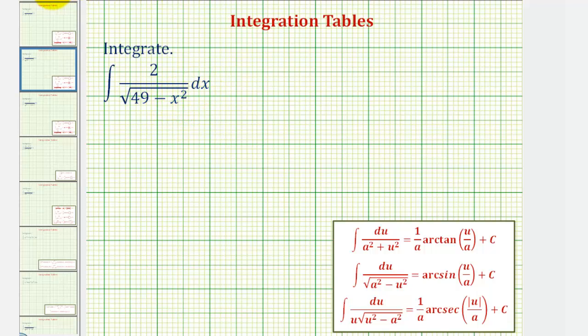Looking at the integration formulas here below, because our denominator is in the form of the square root of a squared minus u squared, we'll be applying this integration formula here. Notice where a squared equals 49 and u squared equals x squared.